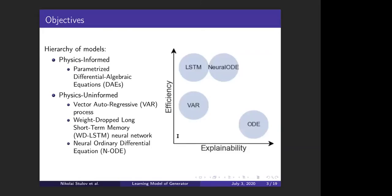The physics-informed models are built based on a metric system of nonlinear differential algebraic equations (DAEs) of sufficiently high order. Learning such models means reconstructing parameters of the DAEs from the available data. In the physics uninformed setting, we test performances of vector autoregressive process, weight-dropped long short-term memory neural network, and neural ordinary differential equations learning scheme. Models that I have listed differ in explainability and efficiency, with the physics informed method being the most explainable and the least efficient, and weight-dropped LSTM neural network being the least explainable and the most efficient.